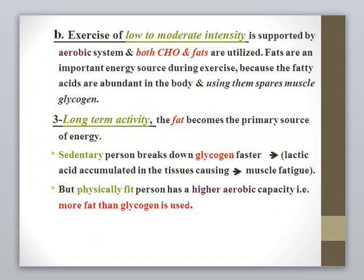For low to moderate intensity and longer duration exercise, the aerobic pathway is used and both carbohydrate and fat are utilized. Fat is an important energy source during exercise because fatty acids are abundant in the body, and they are used to spare muscle glycogen breakdown and prevent muscle fatigue and pain. For long-term activity, fat becomes the primary source of energy.